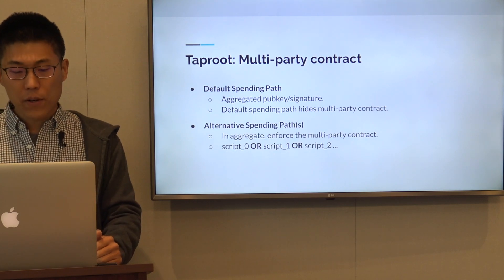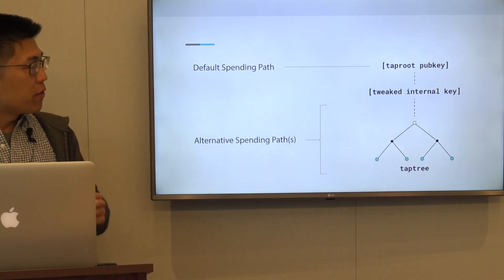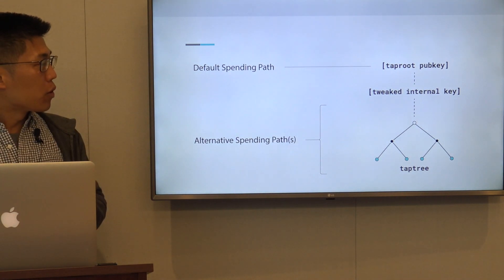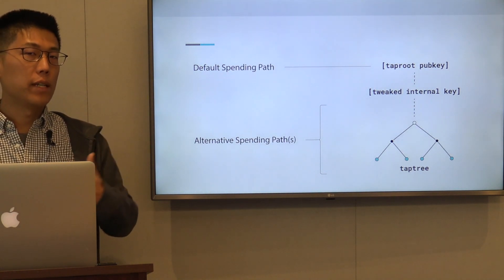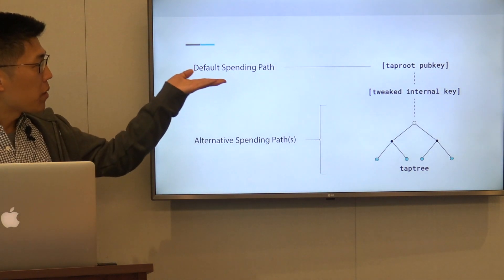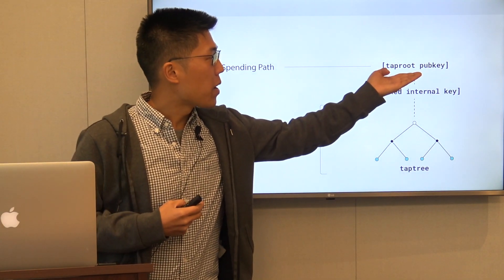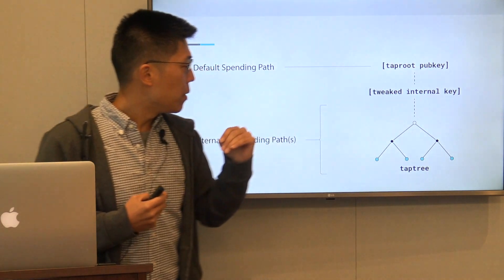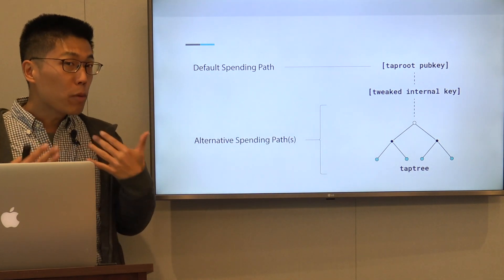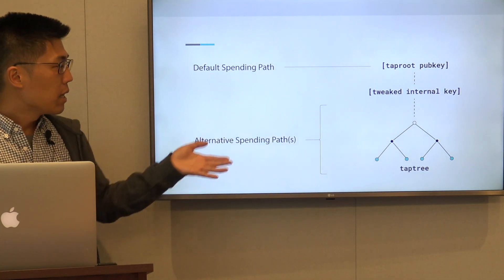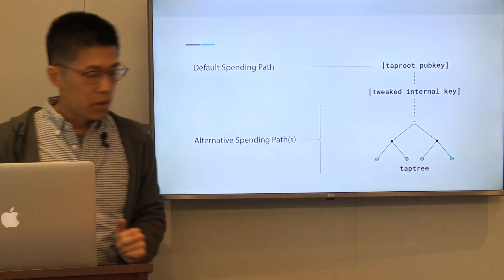In the following sections, I'd like to go over how this is actually encoded into a Taproot output. We talked about the default spending path, which is represented by the Taproot public key, and we talked about alternative spending paths, which are script spending paths, which are then committed into this Taproot output.